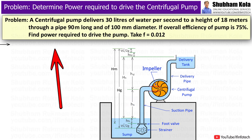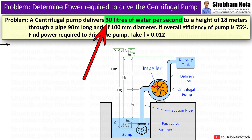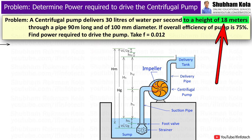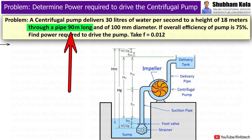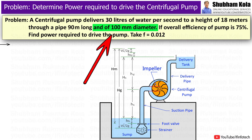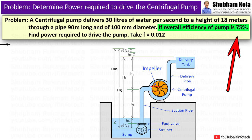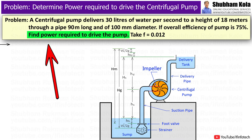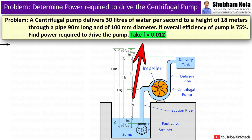So, the question is given as: a centrifugal pump delivers 30 litres of water per second to a height of 18 metres, through a pipe 90 metres long and 100 mm diameter. If the overall efficiency of pump is 75%, find power required to drive the pump. Take friction factor f equal to 0.012.